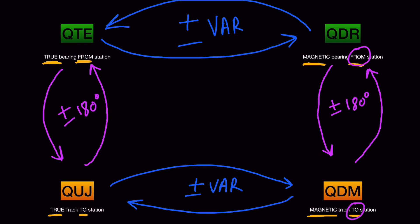This is the type of question you can expect in the exam. If you understand how to convert between QTE, QDR, QUJ, and QDM, and you know how to plot the question as a diagram, you'll be able to solve any radio navigation numerical. If you have any doubts, drop them in the comments or DM me — I'll be happy to help. See you next time, thanks for watching.